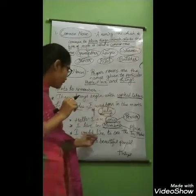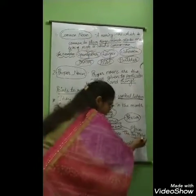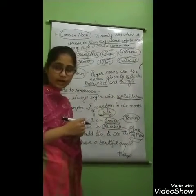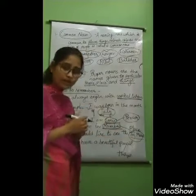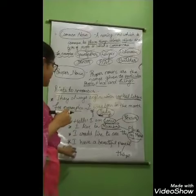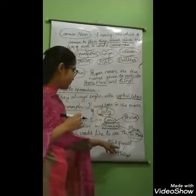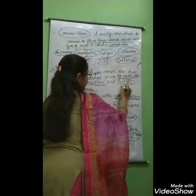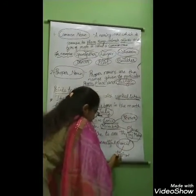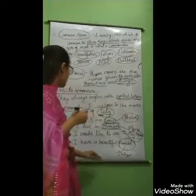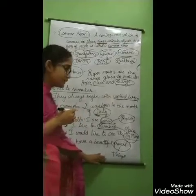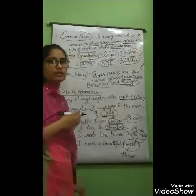Third example: I would like to see the Taj Mahal. Taj Mahal is also an example of a particular proper noun. Last example: I have a beautiful pencil. Pencil is a thing, so this is an example of a proper noun because it is about a particular thing — it is called a proper noun.